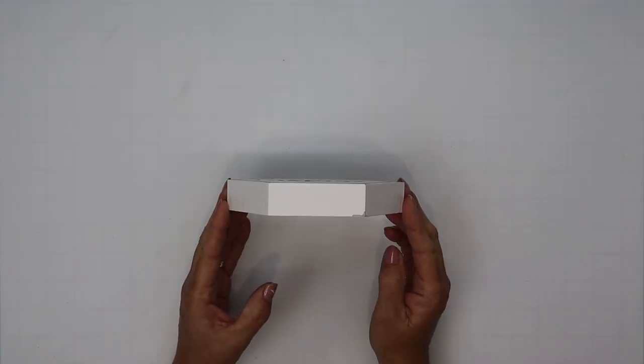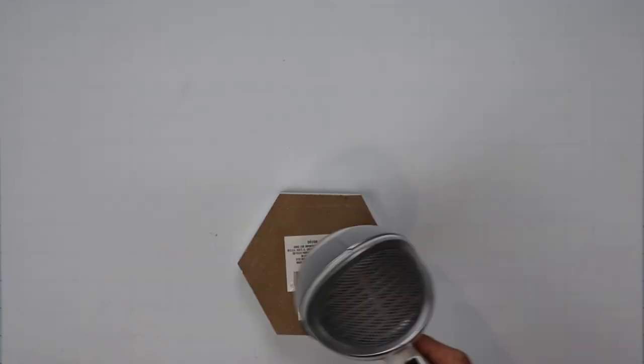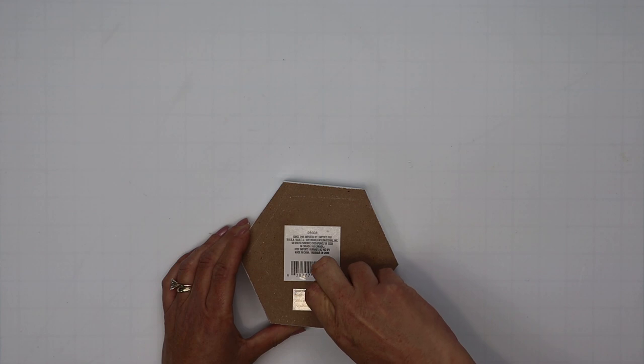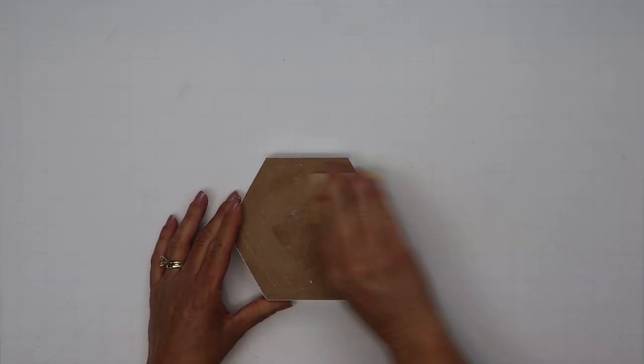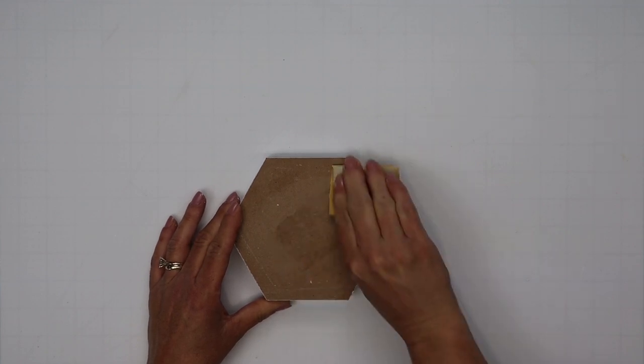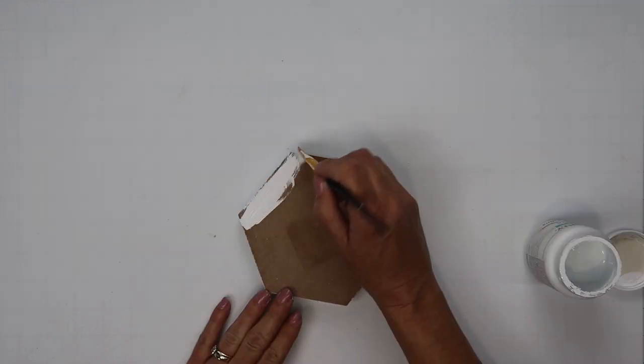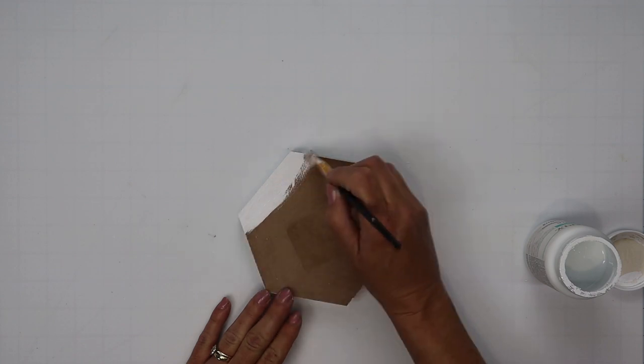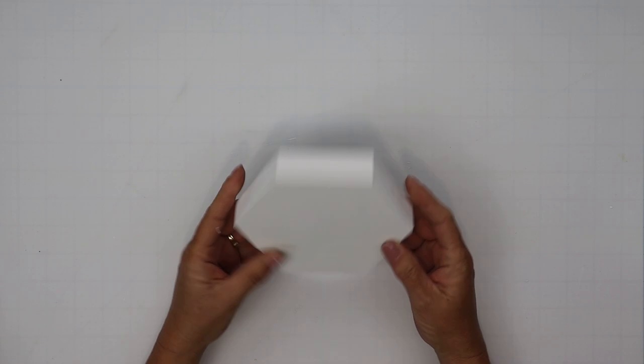For project number four, we're using this hexagon sign from Dollar Tree. Sometimes it is easier to remove the tags or stickers from the back if you heat it up a little bit with your hairdryer to loosen that glue. Then I'll take some sandpaper and remove all of the excess glue. Wipe that down, and I'm going to give this a base coat of white chalk paint to cover it up because we're going to be adding something to the top of this.